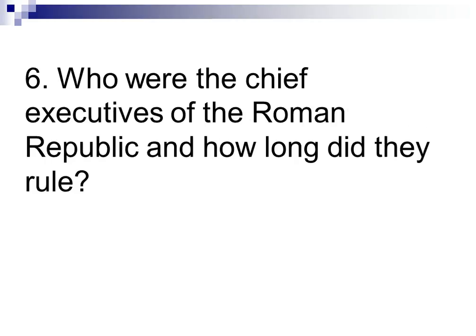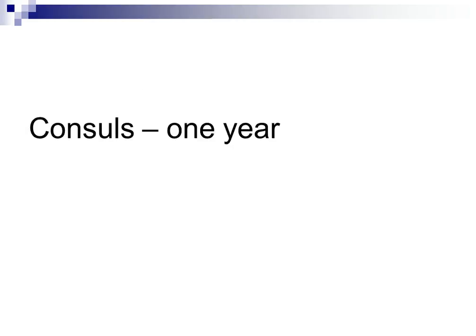Number 6: Who were the chief executives or top government officials of the Roman Republic and how long did they rule? The top government officials in the Roman Republic were called consuls. Each consul would rule for one year.